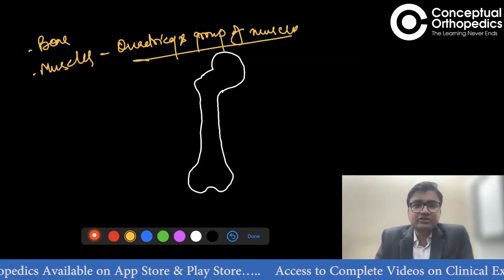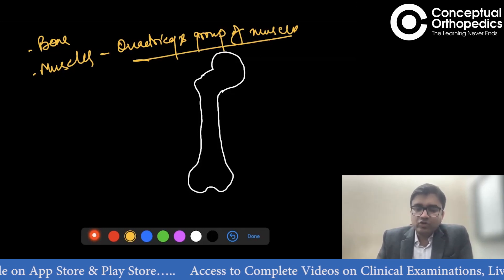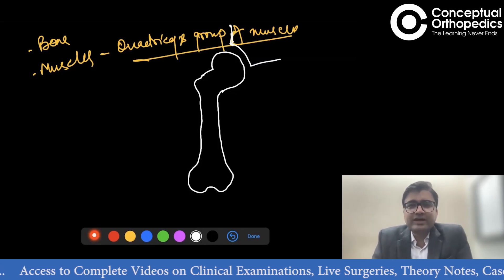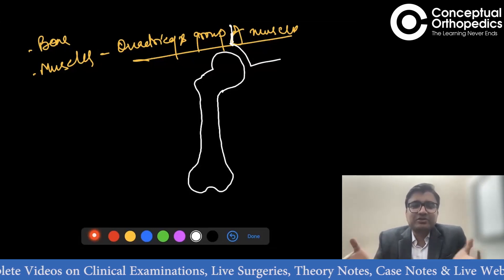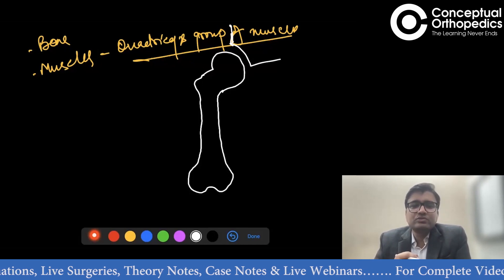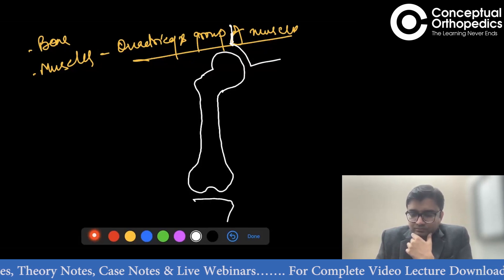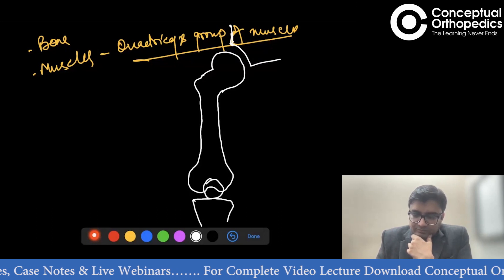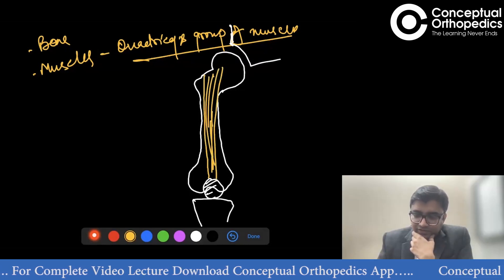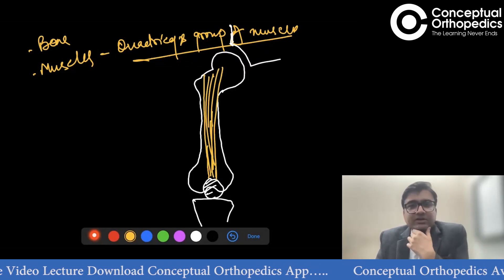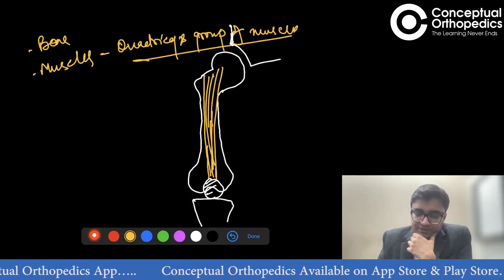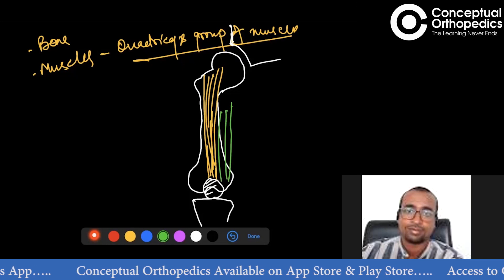Can anyone tell me which muscles constitute the quadriceps group? I would love to have a more interactive session — thought-provoking questions will stimulate learning. Someone responded: the vastus group and the rectus. Correct — and specifically the vastus intermedius, vastus medialis, and vastus lateralis. Very good.